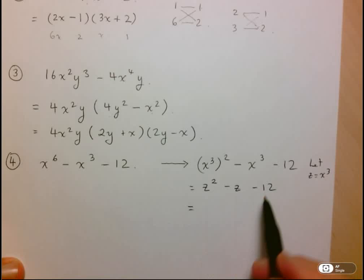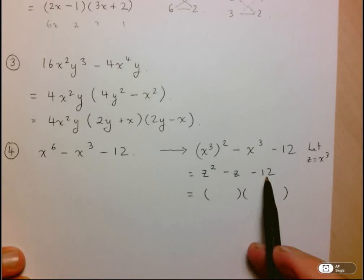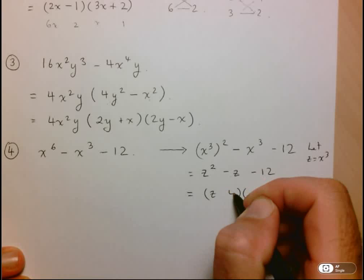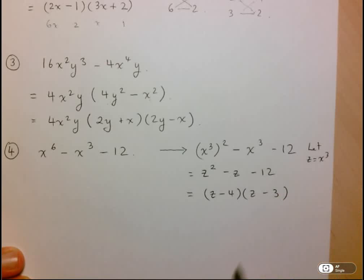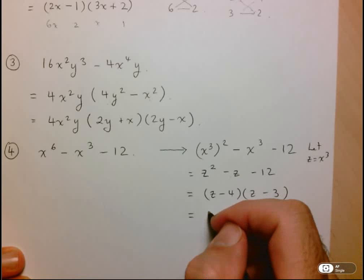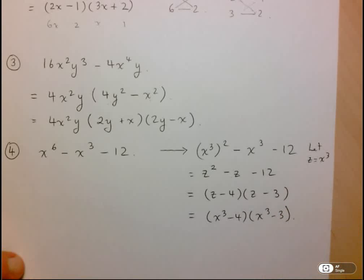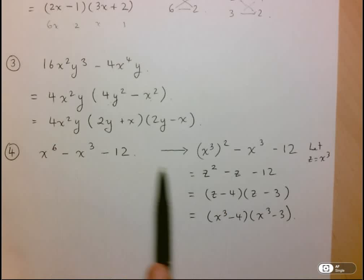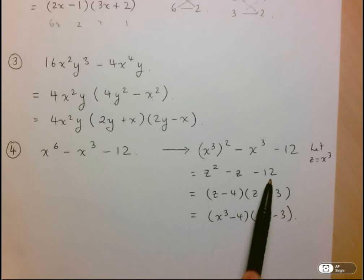And this now is a very easy trinomial to factor. So if you think about the factors of 12 that'll help you add up to negative 1, it'll be 3 and 4. And since you need it to be negative 1, it'll be z - 4, z - 3. And of course, we'd like our final answer to be given in terms of x. So this will be (x³ - 4)(x³ - 3). Now, often you can just go straight from here to there and do that whole change of variable in your head. That's fine, but if you need the extra assistance, you might want to do this.